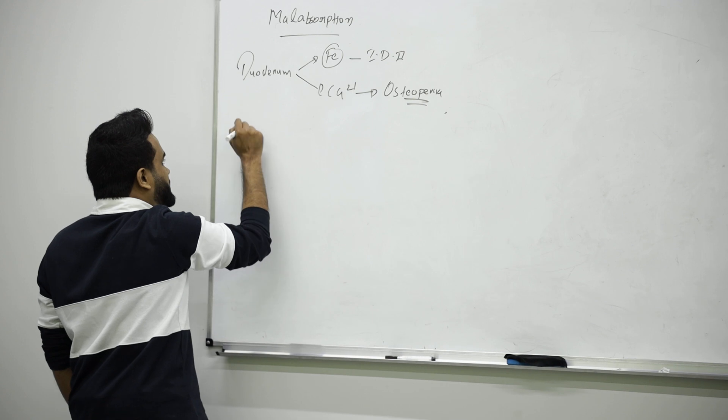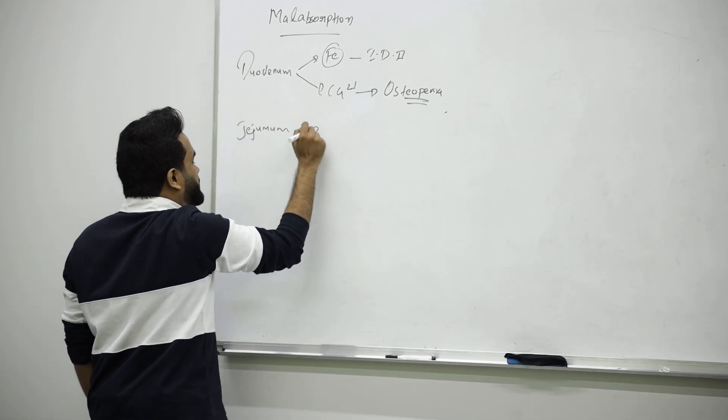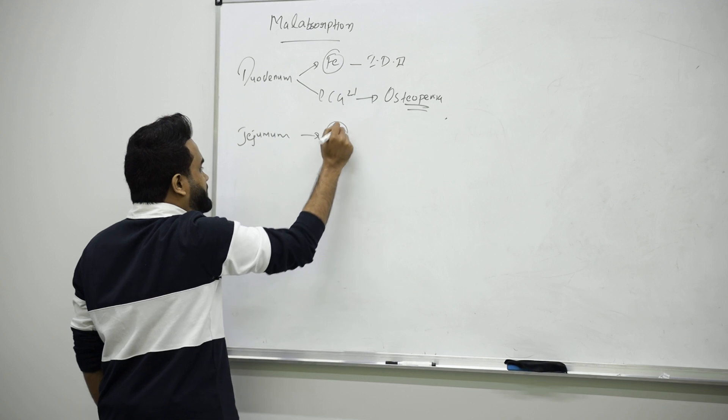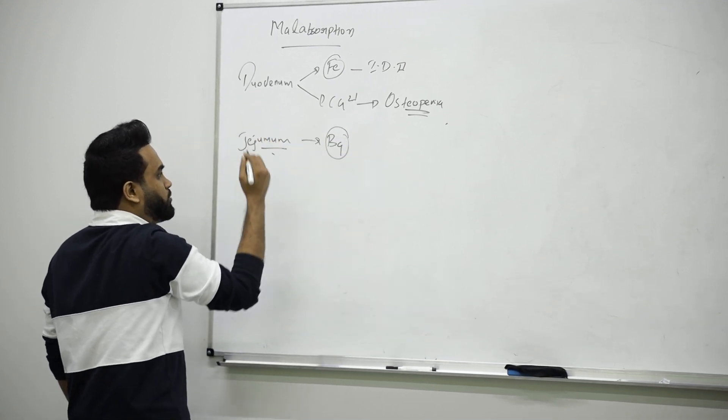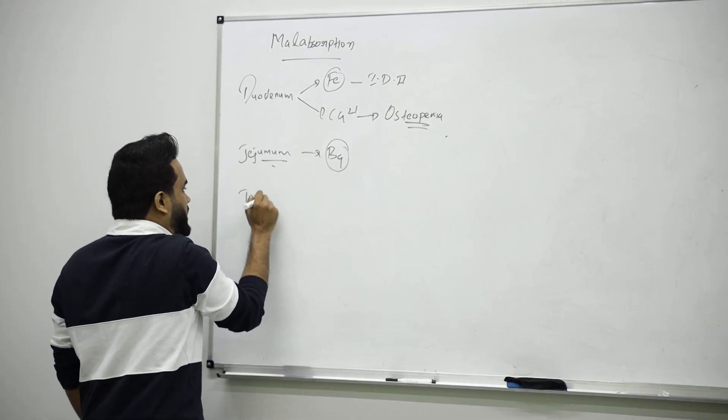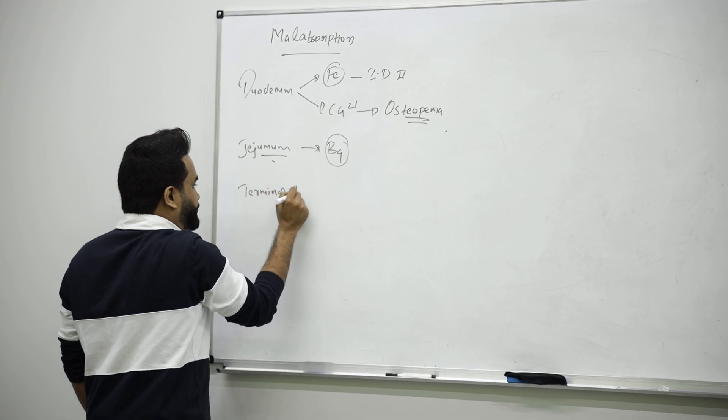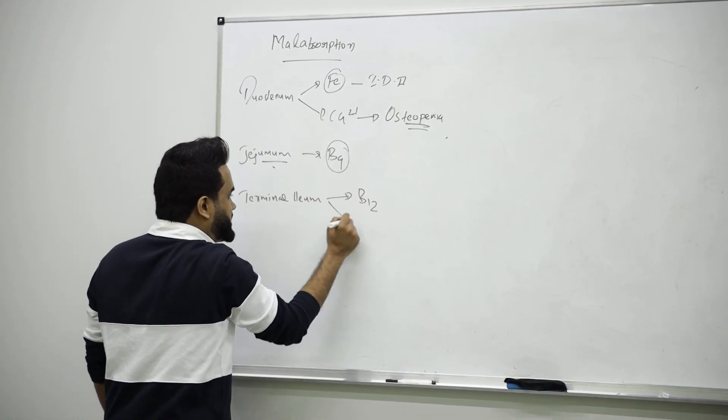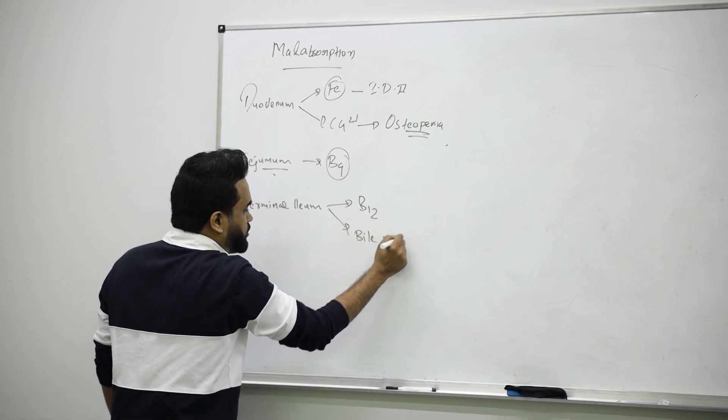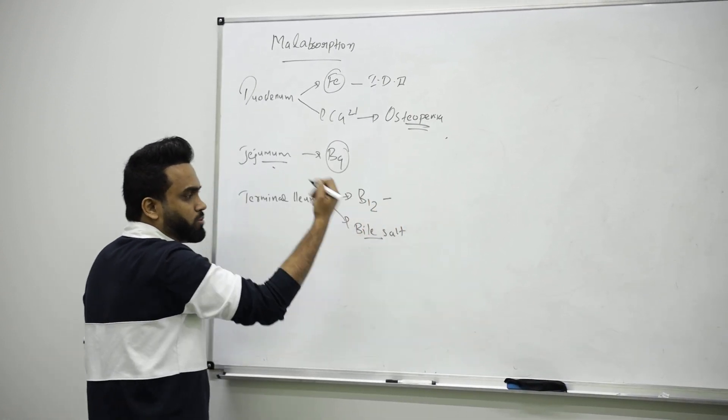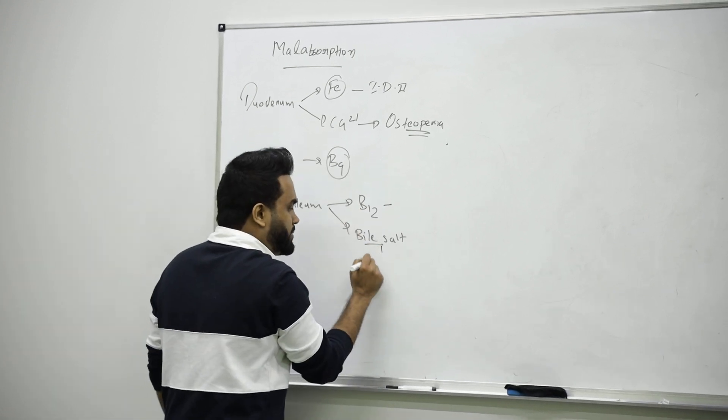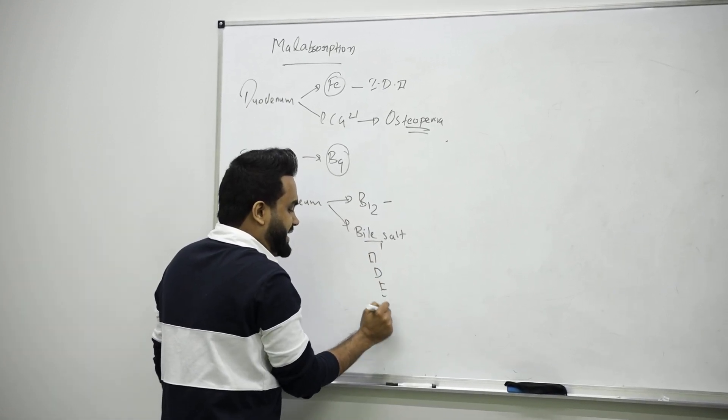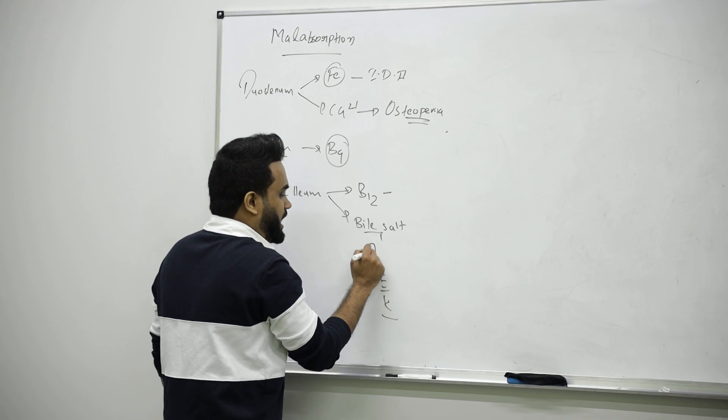The jejunum is responsible for absorbing vitamin B9 folic acid, so any problem in jejunum will cause megaloblastic anemia. In a similar manner, we have terminal ileum, responsible mainly for B12 and bile salt. No B12 means megaloblastic or macrocytic anemia. Bile salt means no vitamin ADEK.